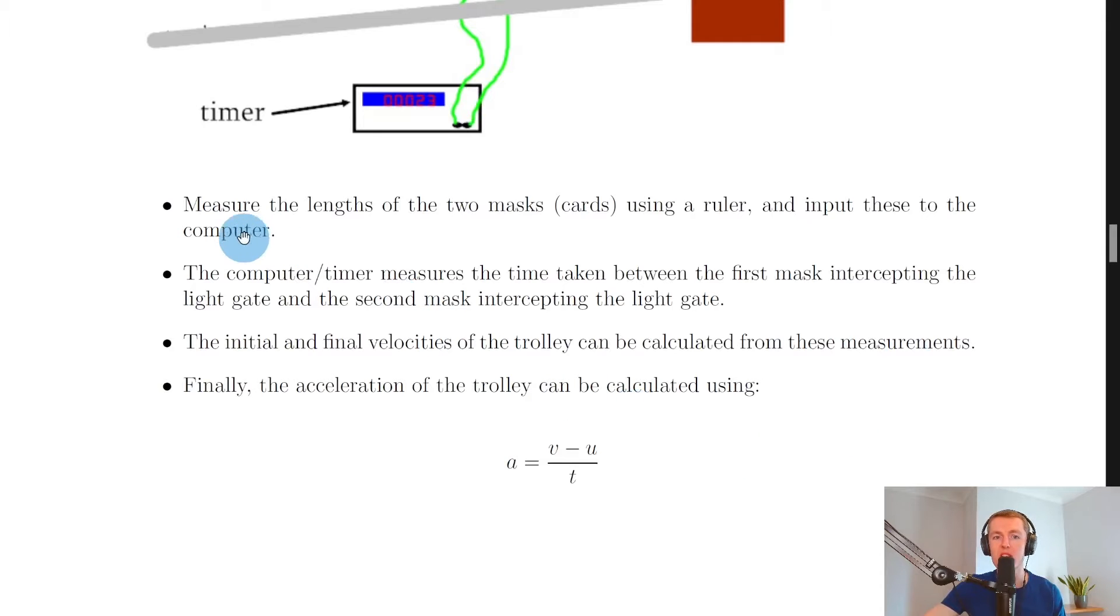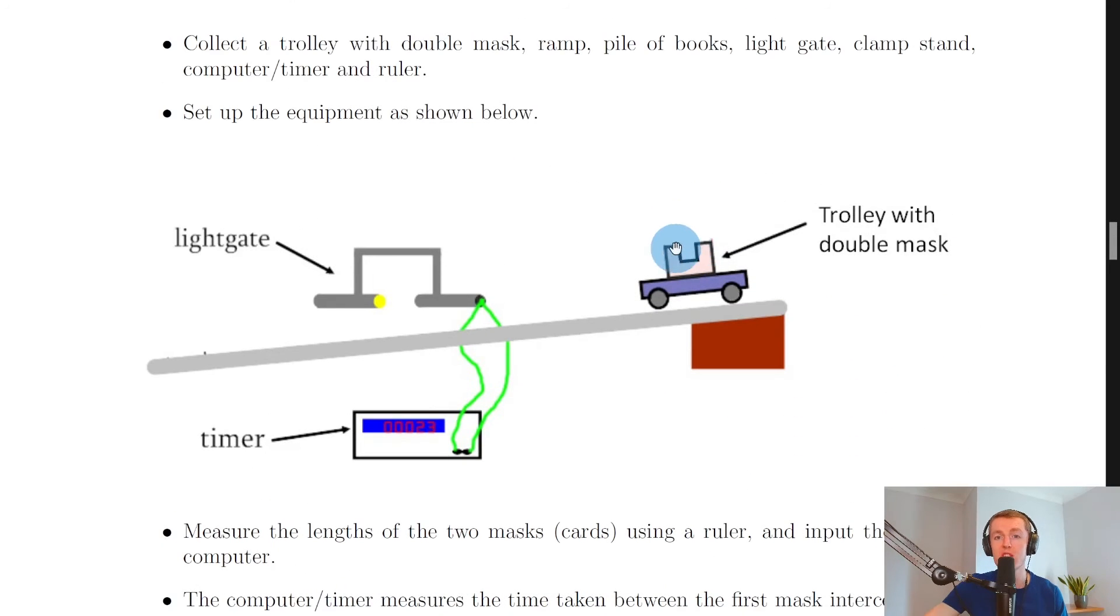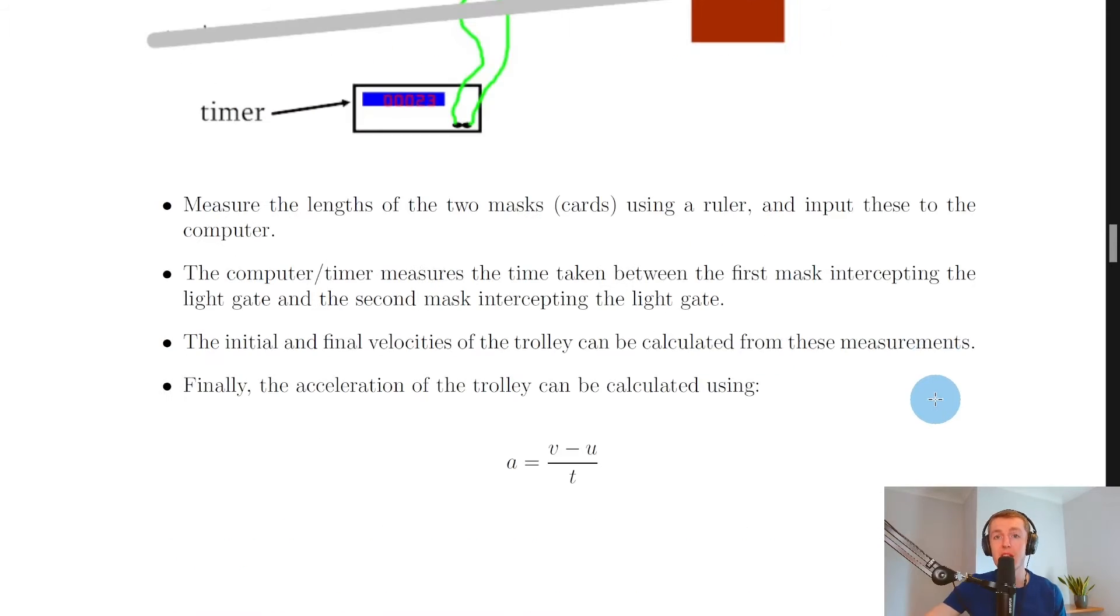What would you do with this equipment? Well, it says firstly measure the lengths of the two masks, i.e. cards, using a ruler and input these to the computer or TSA timer. So you would measure these two parts of the mask using a ruler, and they should be the same length or width.